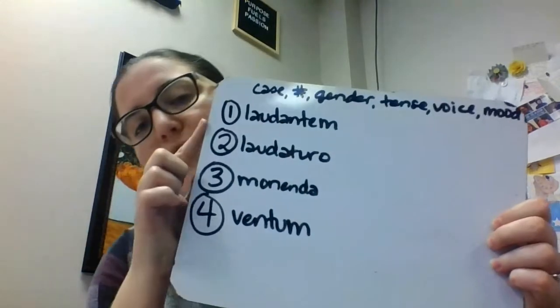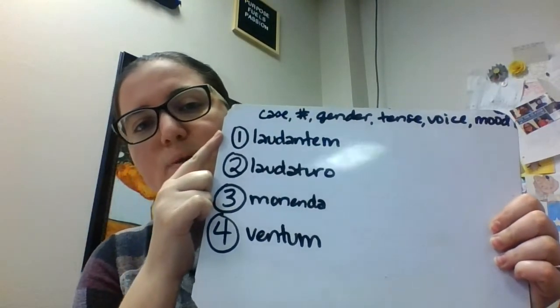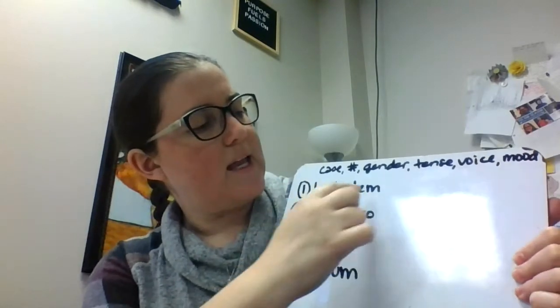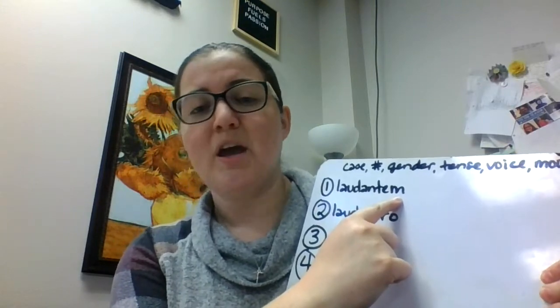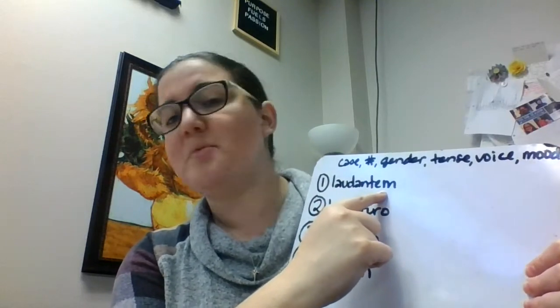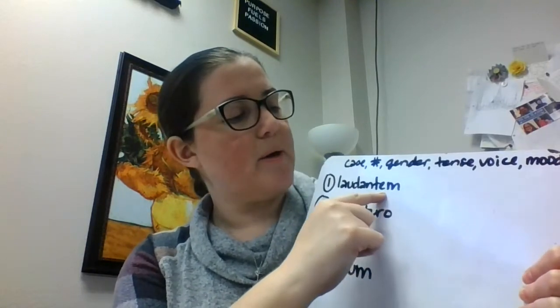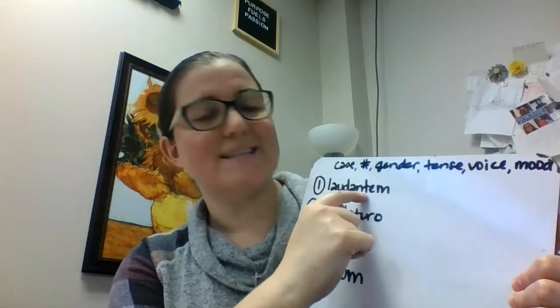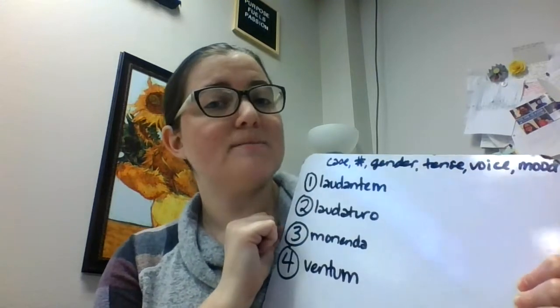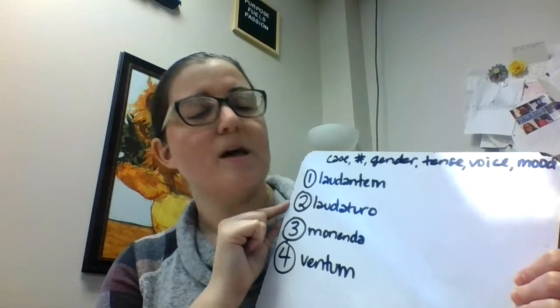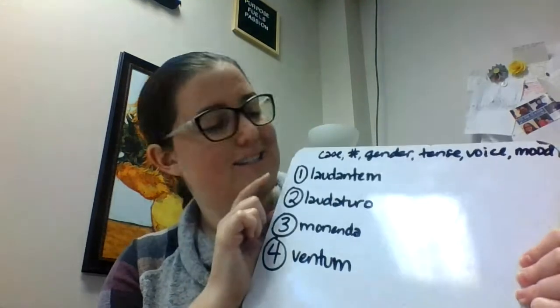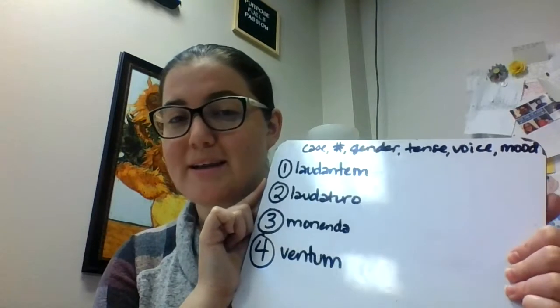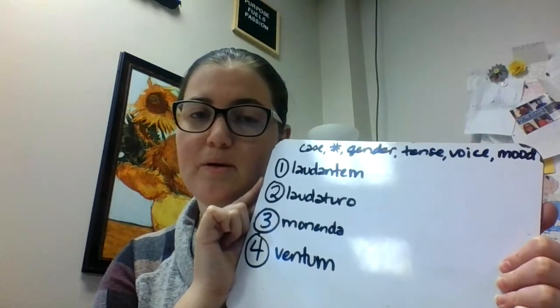I'm going to do the first one for you, and you can pause and try the other three. This one is laudantem. I'm looking at my ending here — the 'em' ending — which I know is third declension. So this would be accusative, singular, masculine or feminine. I'll pick masculine: accusative, singular, masculine. Then I'm looking for my type of participle. I look at this 'nt' — this 'nt' combined with the third declension ending tells me that is present active. So my parsing is: accusative, singular, masculine, present active participle.